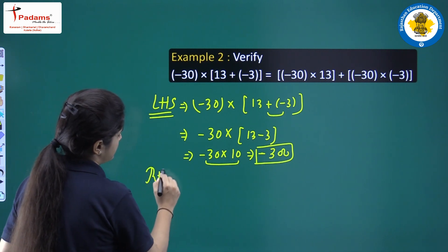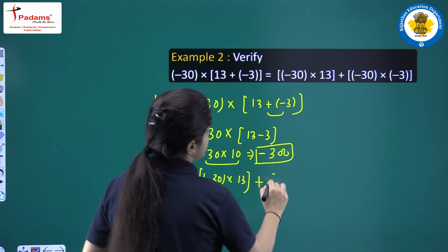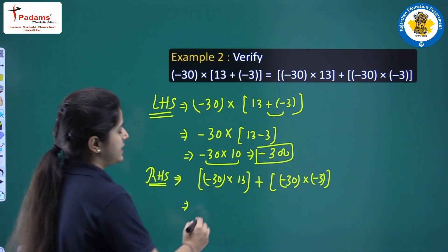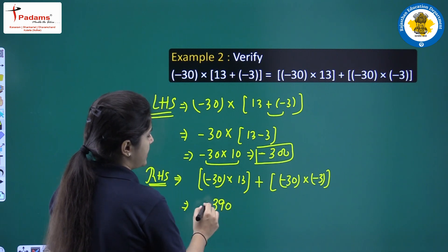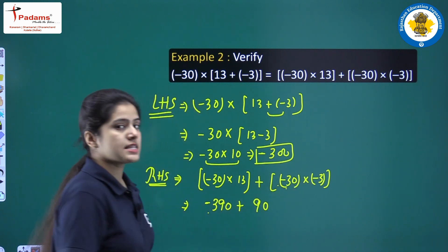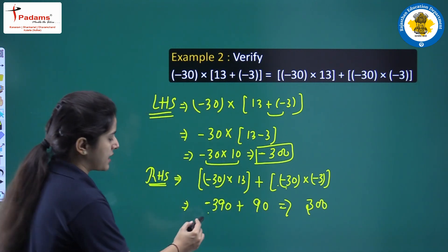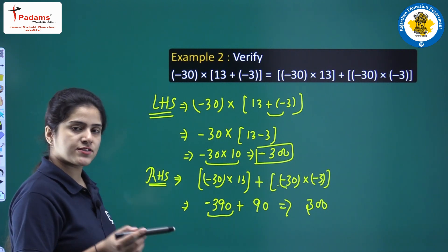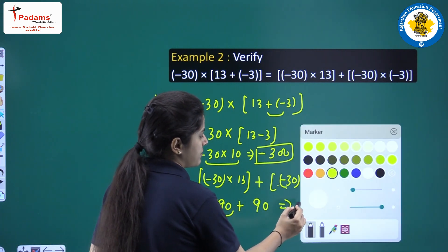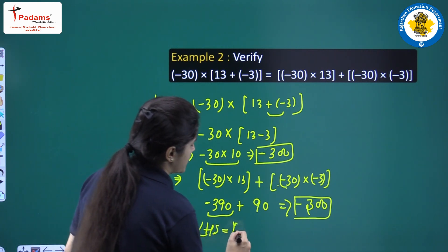Now we will do the right-hand side: minus 30 into 13 plus minus 30 into minus 3. 30 into 13 equals 390, so we have minus 390. Then minus times minus is plus, so minus 30 into minus 3 equals plus 90. Minus 390 plus 90 equals minus 300, because the larger number contains the negative sign. In addition, the sign of the larger number is the resultant sign. So the right-hand side is also minus 300, and left-hand side equals right-hand side — it is verified.